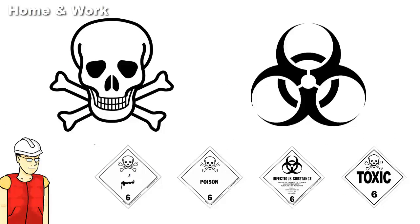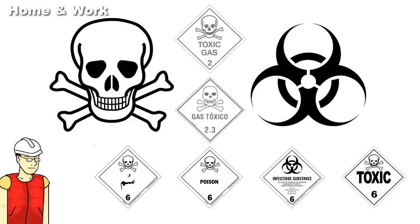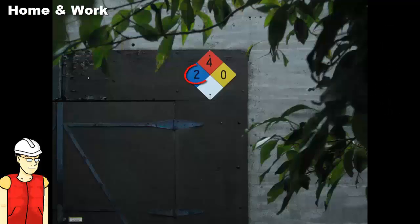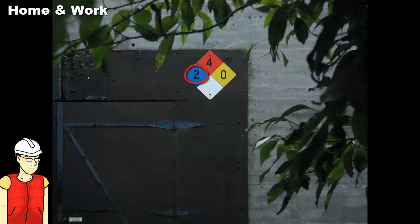We can always recognize toxic, poisonous, and infectious substances by the signals with the number 6 or the symbols shown on screen. In the case of poisonous compressed gases, class 2.3 or 2 with the poison symbol. Also, look at the blue color in the diamond quartet — a 0 represents a material that is non-toxic, while numbers 1, 2, 3, or 4 indicate risks to health or the environment.